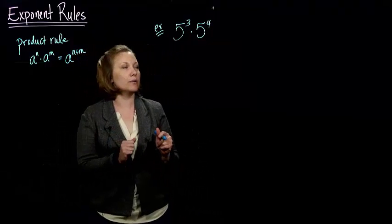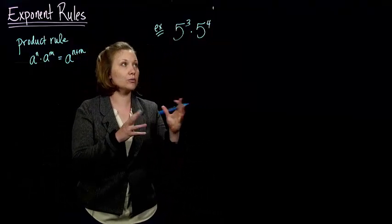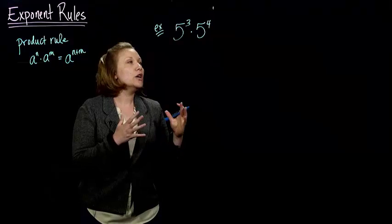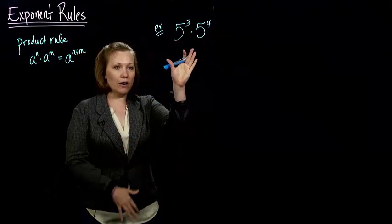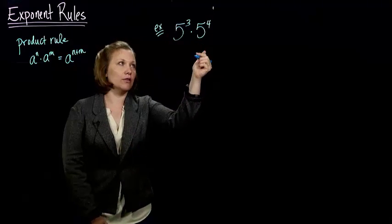Let's do an example with exponent rules so you can see how they work, or the product rule specifically. I've got an example here, 5 to the 3rd times 5 to the 4th.